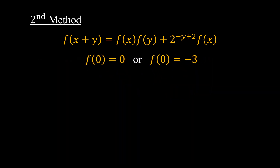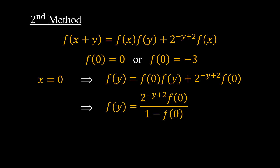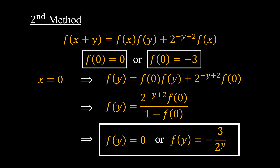To find the explicit form of f, we substitute x = 0 into the original functional equation, giving us an explicit form for f(y). Substituting f(0) = 0 gives f(y) = 0. Substituting f(0) = −3 gives f(y) = −3 / 2^y. These are the solutions from the second method, and we are done.